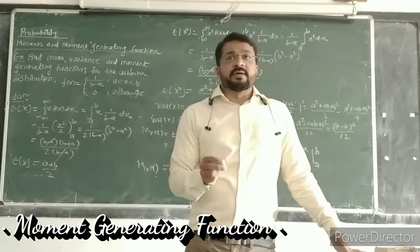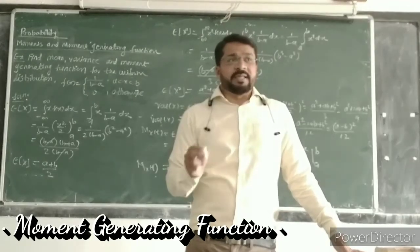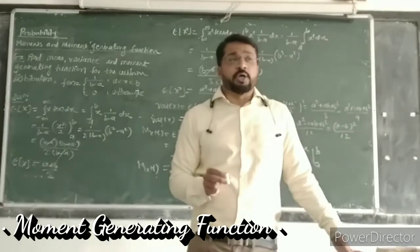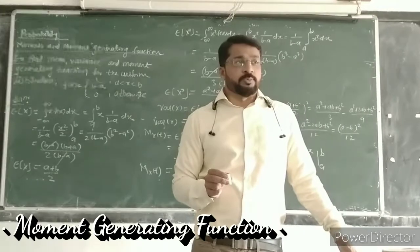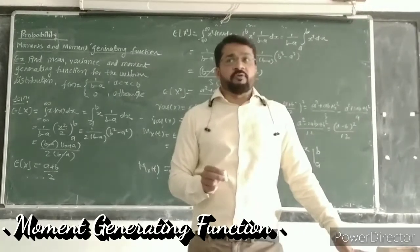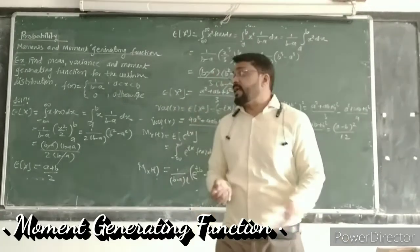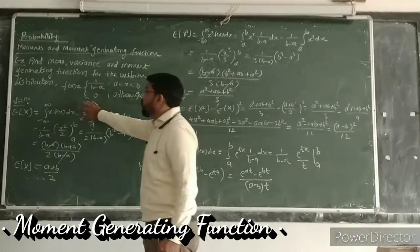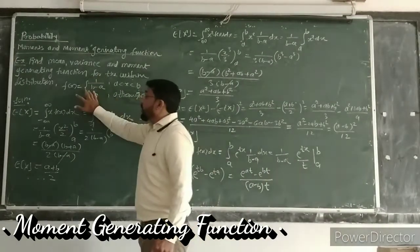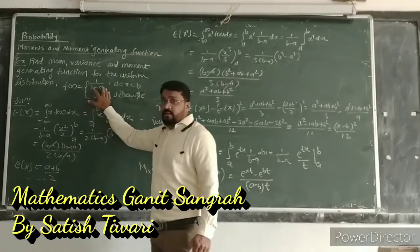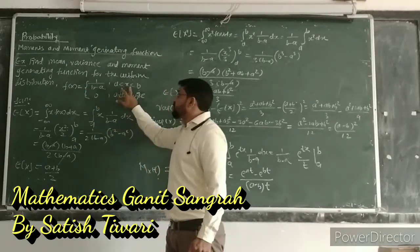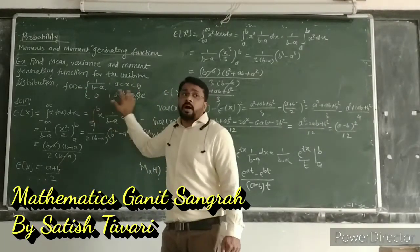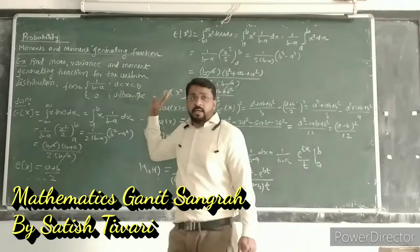This is how to get the mean, variance, and moment generating function for the uniform distribution. The uniform distribution is defined as f(x) = 1/(b-a) with x lying between a and b, and is 0 otherwise.